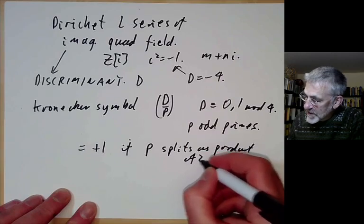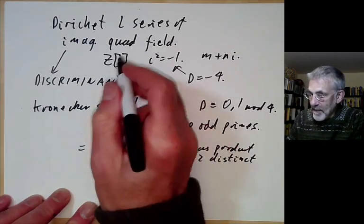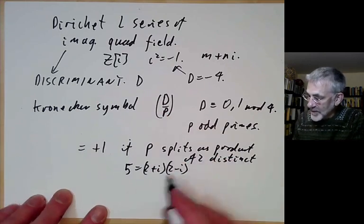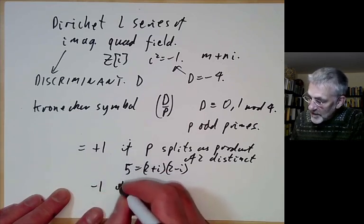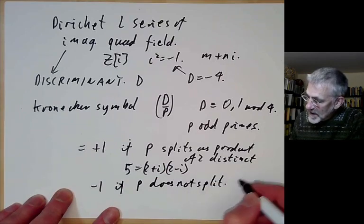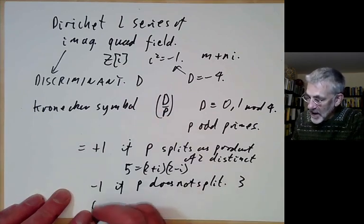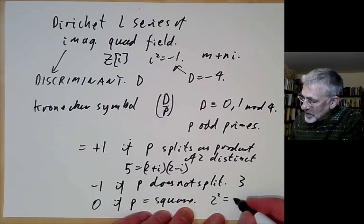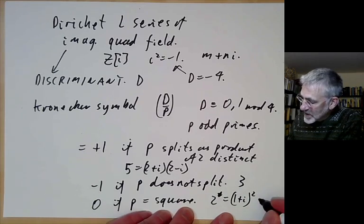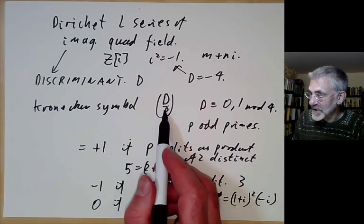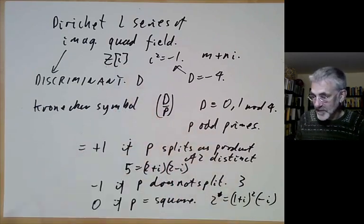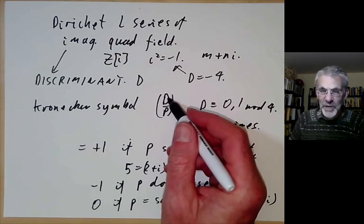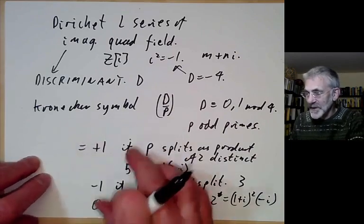For an odd prime p, the Kronecker symbol (D/p) tells you how p decomposes in the imaginary quadratic field: it equals +1 if p splits as a product of two distinct primes (e.g., 5 = (2+i)(2−i) in the Gaussian integers), −1 if p does not split (e.g., 3 stays prime in Z[i]), and 0 if p becomes a square (e.g., 2 = −i(1+i)²). This only requires b positive and a ≡ 0 or 1 mod 4, avoiding unpleasant behavior.